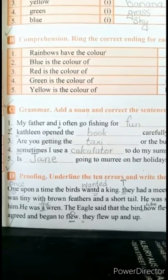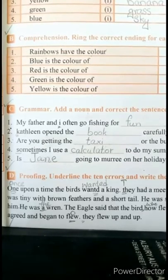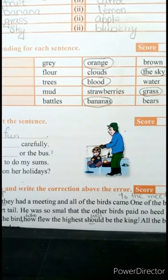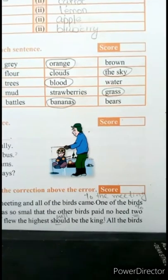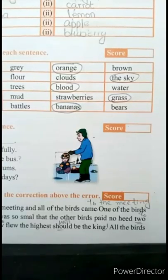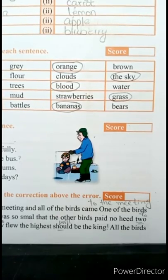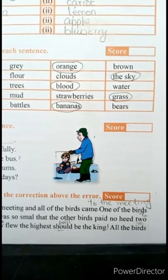Then: 'one of the birds was very tiny, with brown feathers and a short tail.' ان میں سے ایک پرندہ بہت چھوٹا تھا — tiny means چھوٹا — اور اس کے brown رنگ کے پر اور چھوٹی سی دُم. He was so small that the other birds had no heat to him. یہاں پر 'too' جو ہے اسکو underline کریں — یہاں TW-O نہیں، T-O آئے گا.